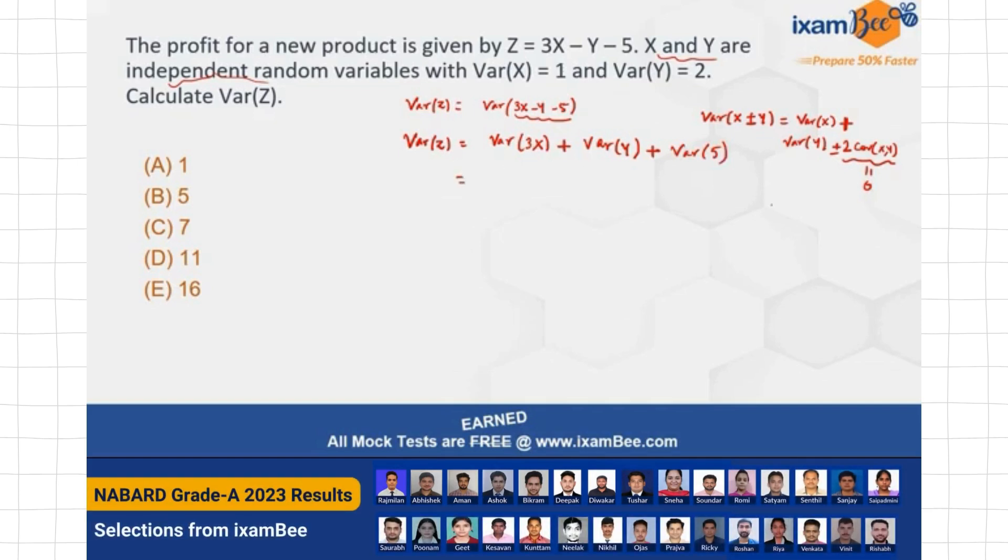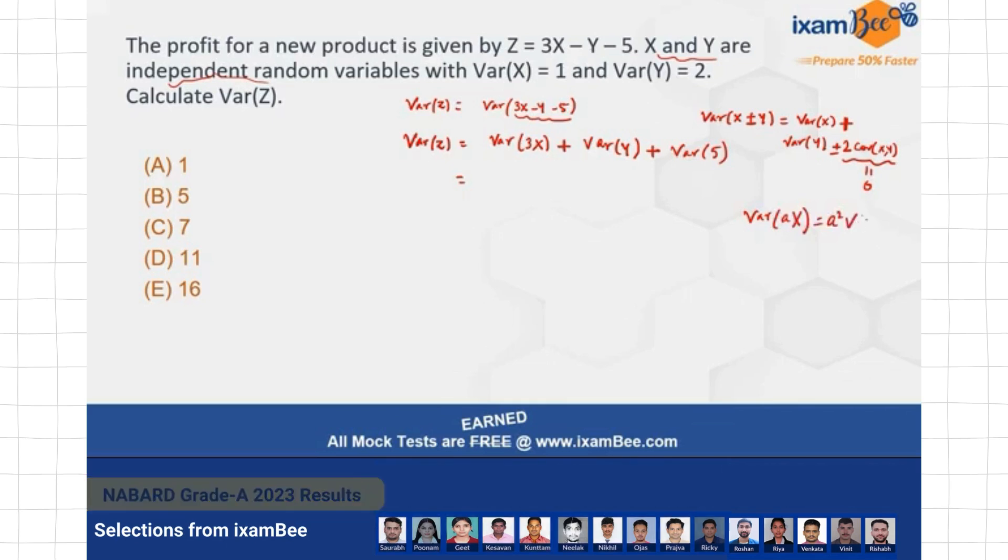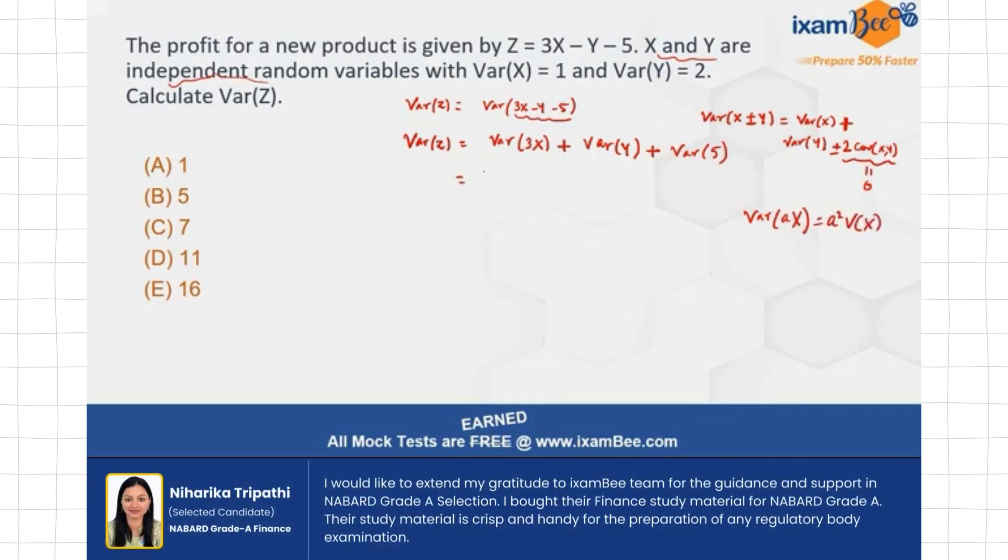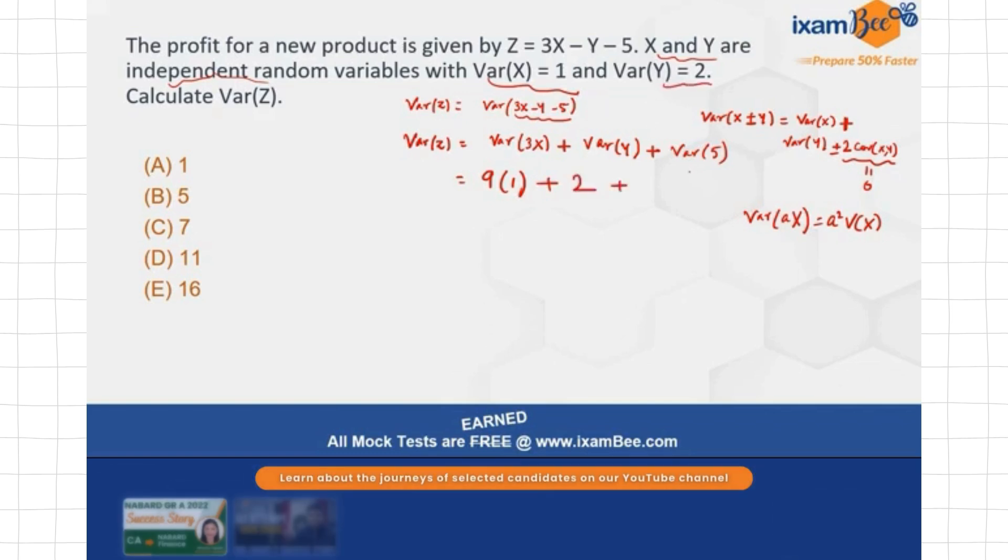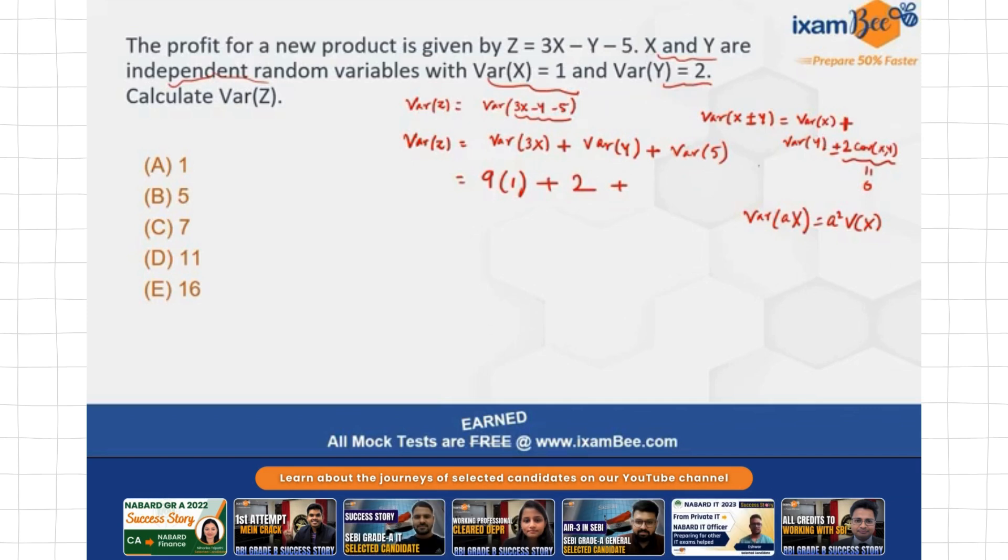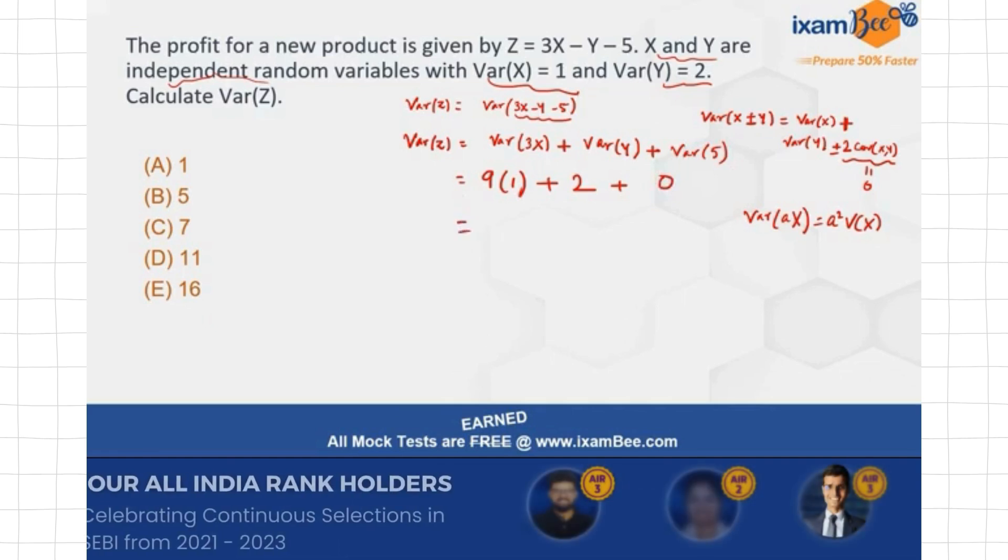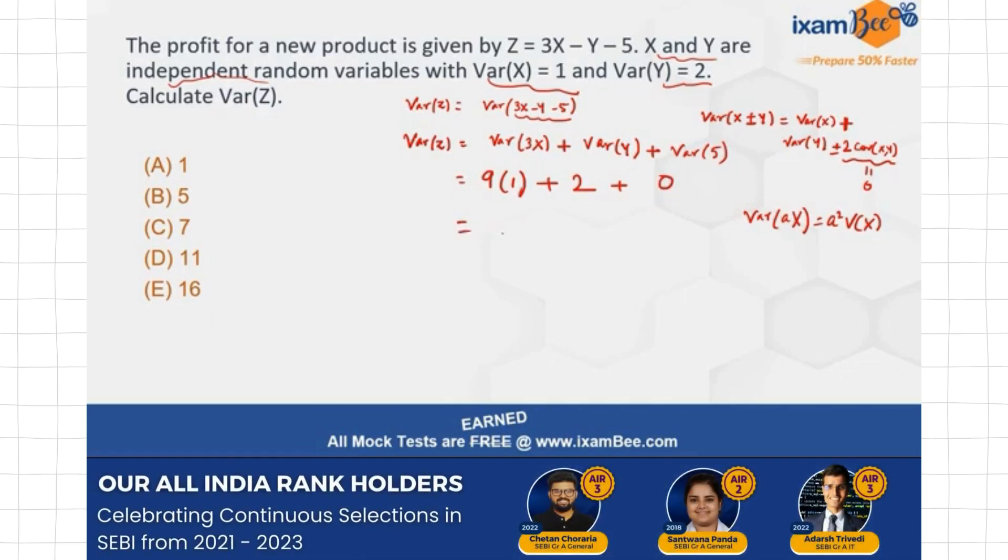So this is equal to now, remember the formula of Moffat's law of variance that variance of A times X is what? A square times the variance of X, right? So this is going to be 9, 3 square times the variance of X is given to us, which is 1 in the question plus the variance of Y, which is also given, which is 2 plus the variance of minus 5. Now, this is a constant term, so it's going to be 0, right? So you can add this now, 9 plus 2, which is 11.